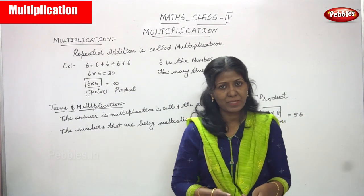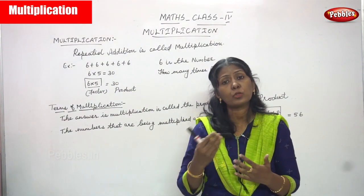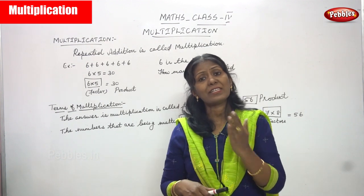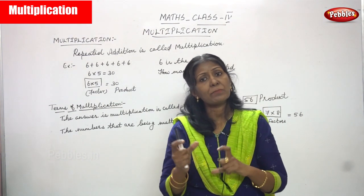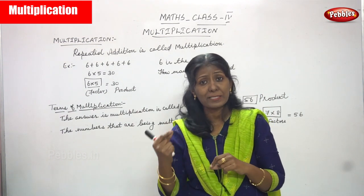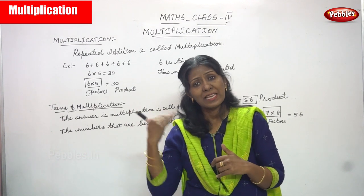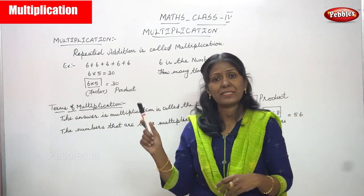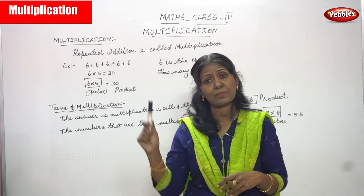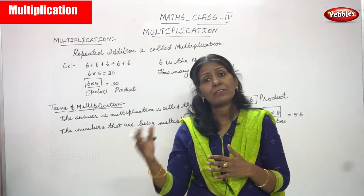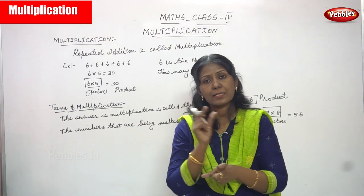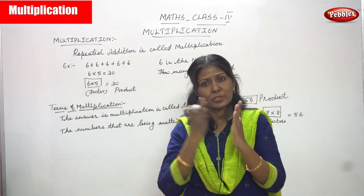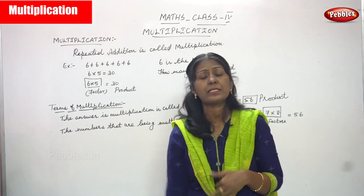Once again: multiplication — repeated addition is called multiplication. There are two terms of multiplication: one is factor and the other one is product. For example, 7 into 8 — these two numbers being multiplied are called factors, and the answer 56 is a product. 6 plus 6 plus 6 plus 6 plus 6: 6 is repeated 5 times, so 6 into 5 equals 30 — these two numbers are factors and 30 is a product.